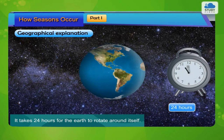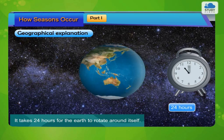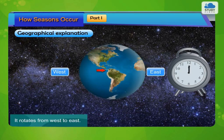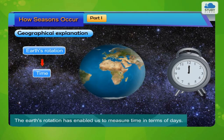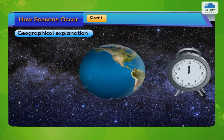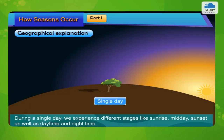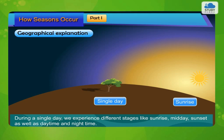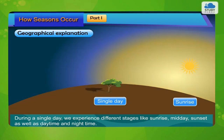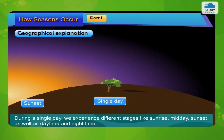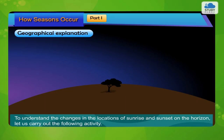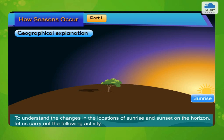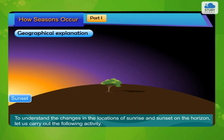It takes 24 hours for the Earth to rotate around itself. It rotates from west to east. The Earth's rotation has enabled us to measure time in terms of days. During a single day, we experience different stages like sunrise, midday, sunset, as well as daytime and nighttime. To understand the changes in the locations of sunrise and sunset on the horizon, let us carry out the following activity.